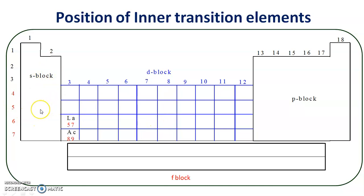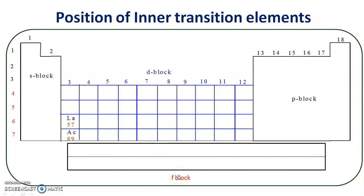In case of s-block elements, the differentiating electron or last electron enters the s orbital. In case of p-block elements, the last electron enters the p orbital. In case of d-block elements, the last electron enters the d orbital, whereas in case of f-block elements, the last electron or differentiating electron enters the f orbital. There are seven f orbitals, five d-orbitals, three p-orbitals, and only one s orbital.